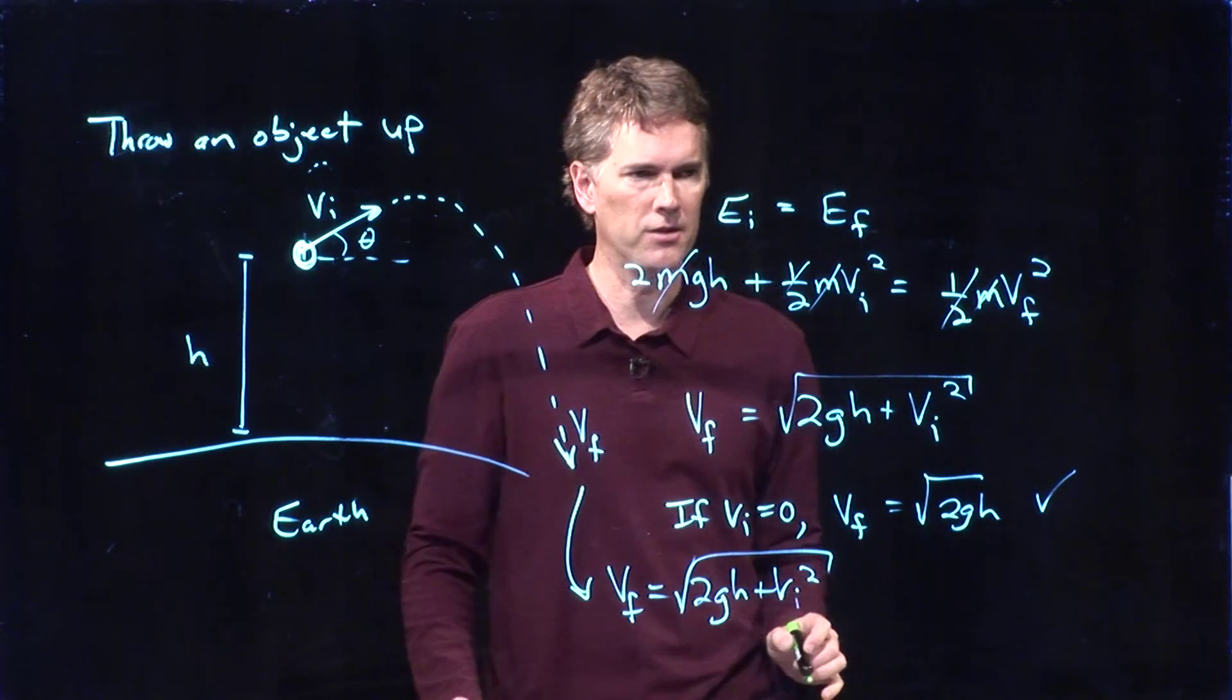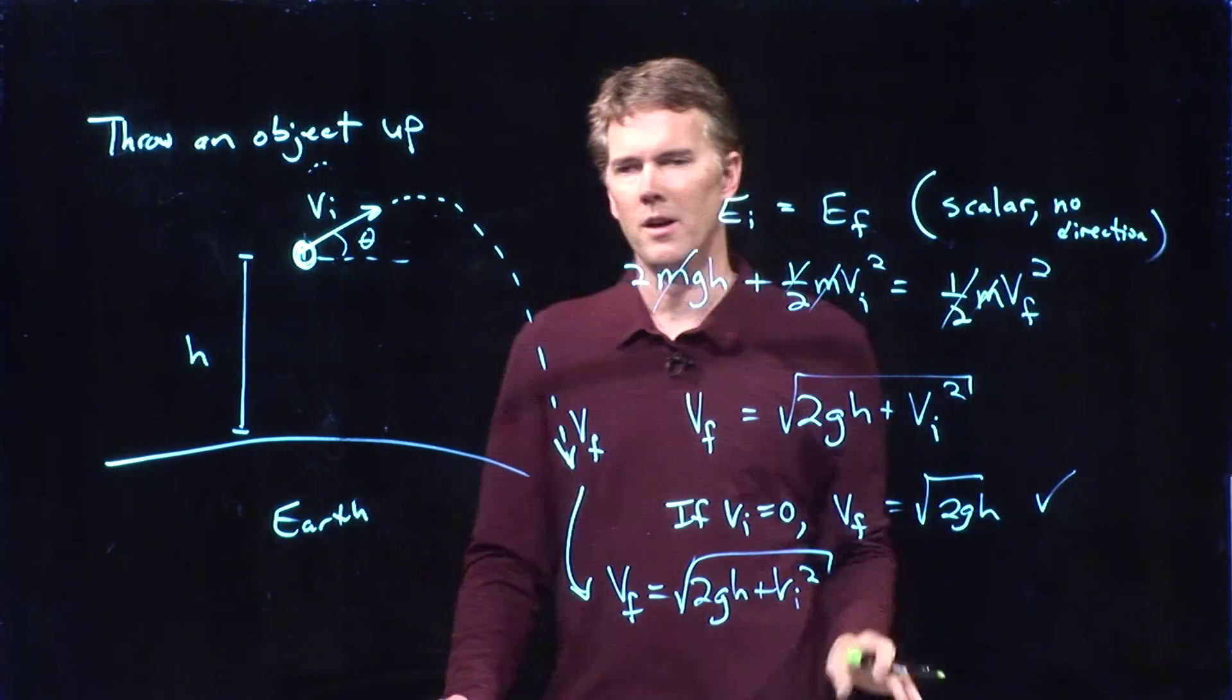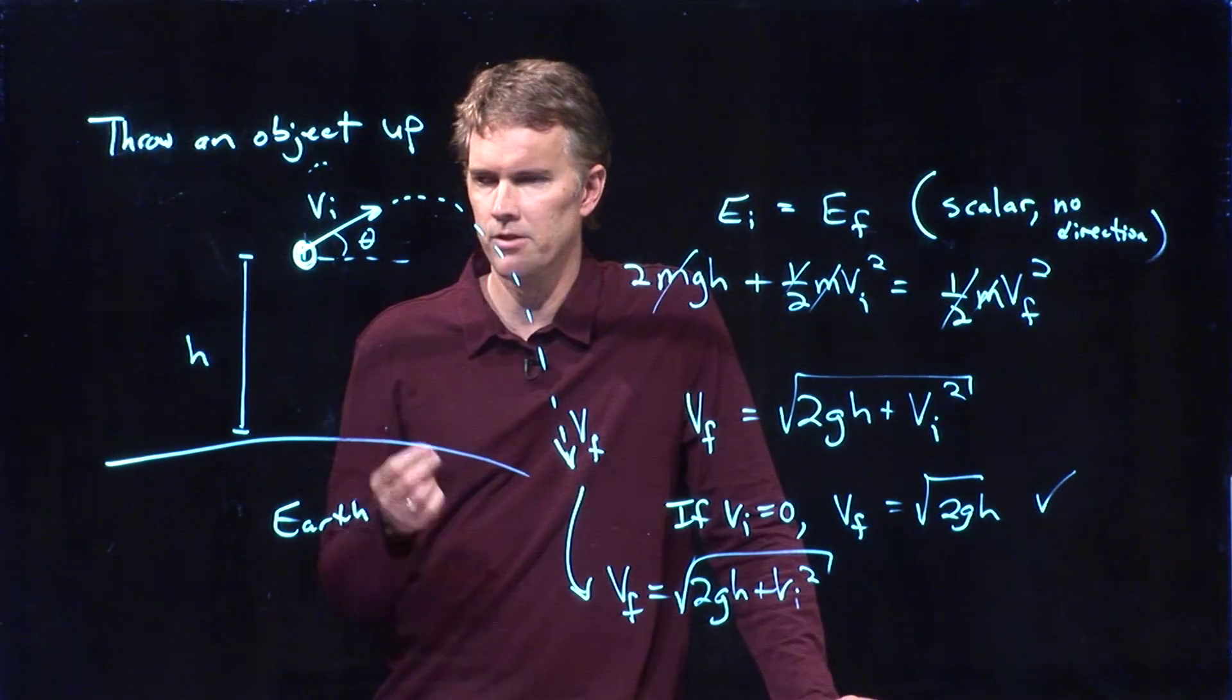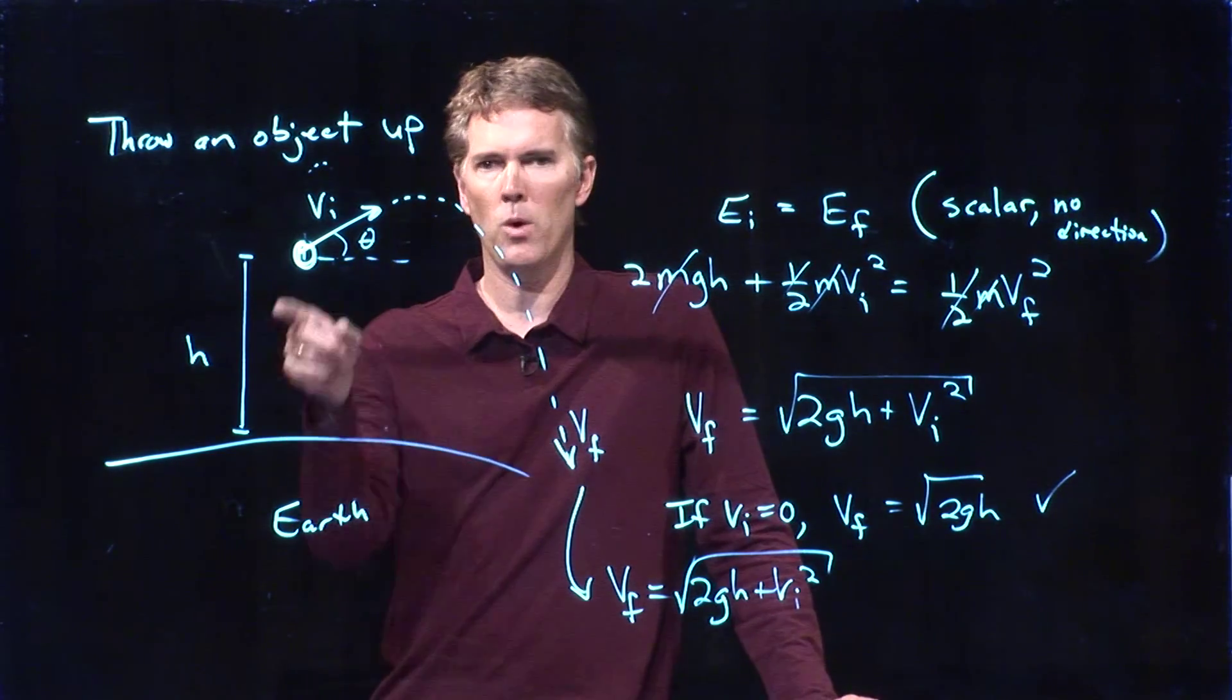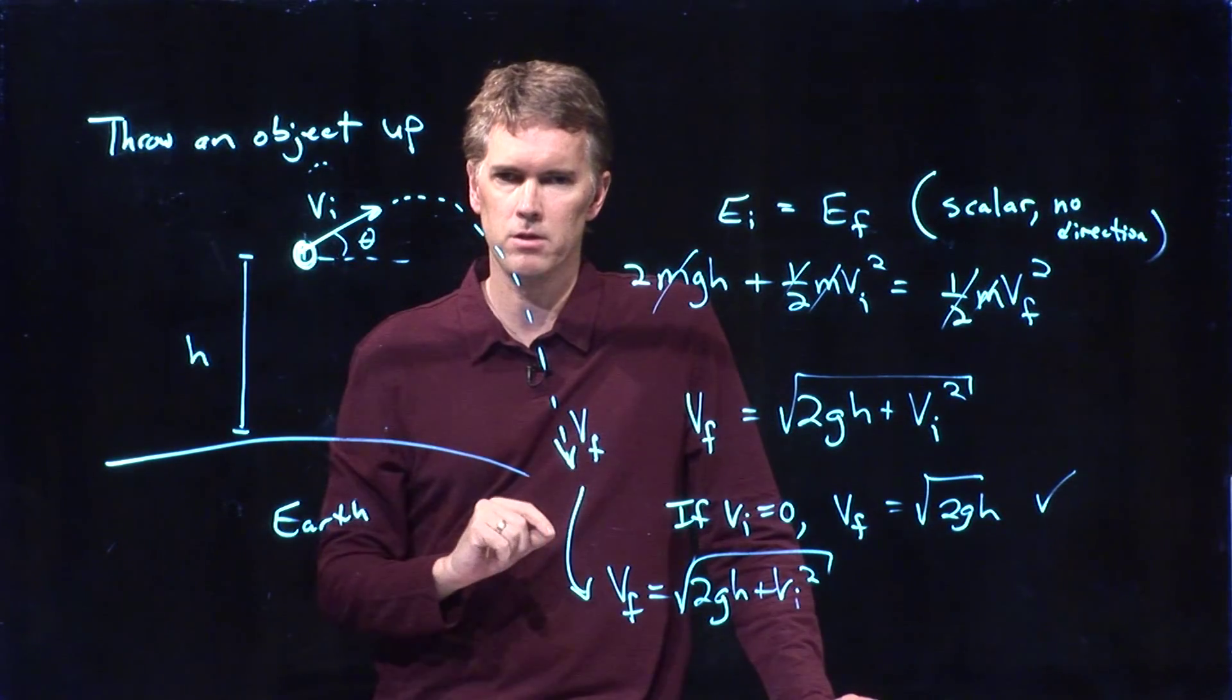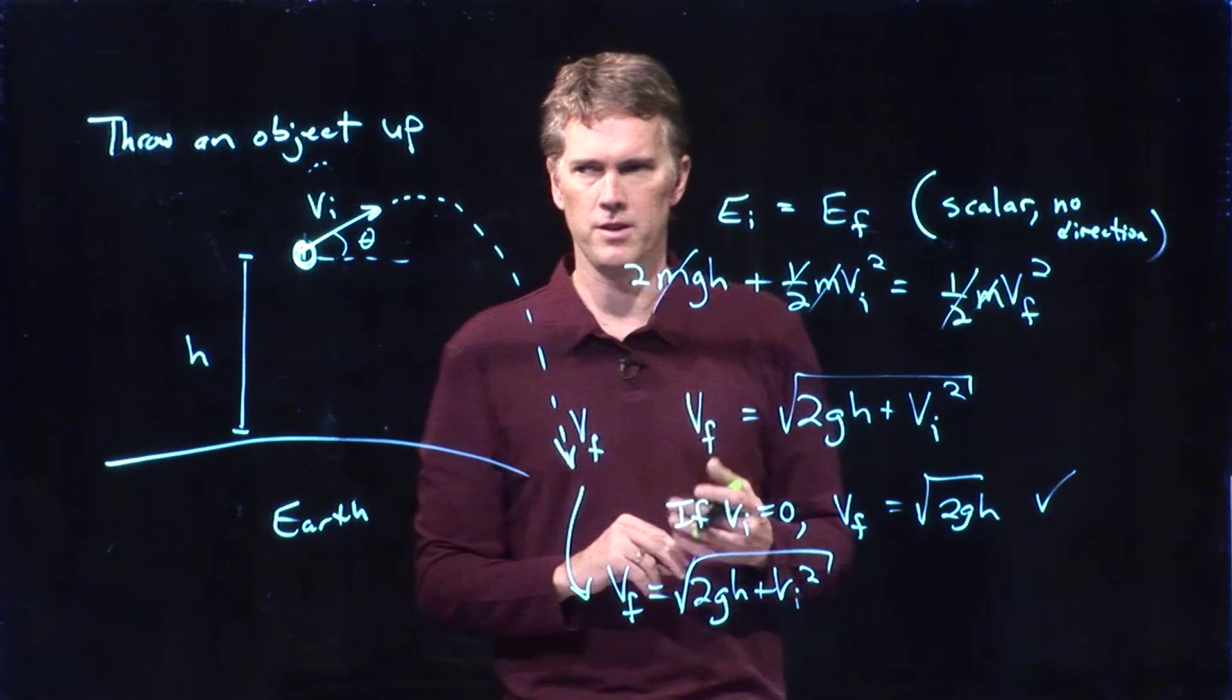And that's because it's a scalar equation. There's no direction associated with conservation of energy. There's no direction associated with energy. It's a number. It's 10 joules or 20 joules. It is a number. And so it's actually independent of this angle theta. It doesn't matter what direction you throw this thing, it's always going to hit the ground at that speed vf. All it depends on is how high you started from and how fast you threw it. And that's it. Which I think is kind of cool. Kind of a nice simplifying feature of conservation of energy.